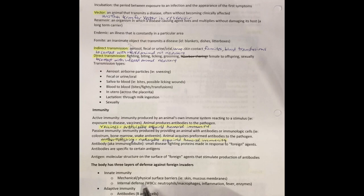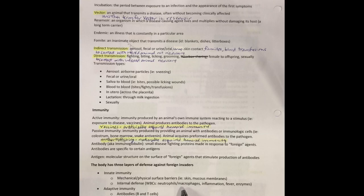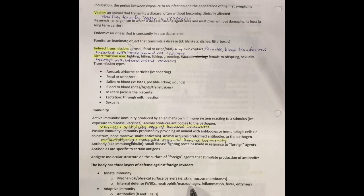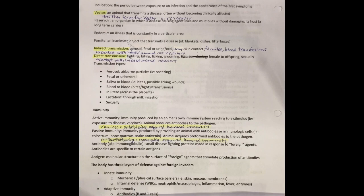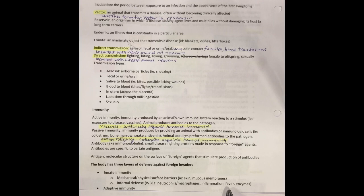And then we have internal defenses — things like white blood cells (WBCs). There are two different types involved: neutrophils and macrophages. Both those guys like to eat up bacteria or damaged cells — they're phagocytes, they eat other cells. Inflammation is also a type of defense against illness. The cardinal signs of inflammation are redness, swelling, and pain at the site. Fever as well — when the body temperature rises, it's the body attempting to kill off those foreign invaders. And our body has enzymes that can be used to kill off foreign invaders coming into the body.